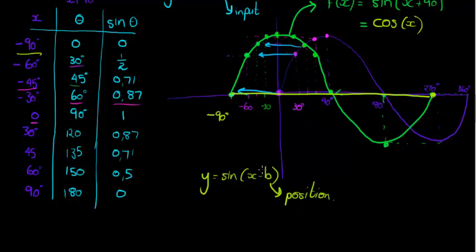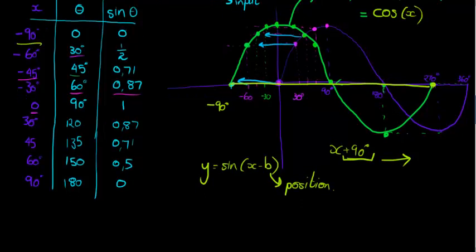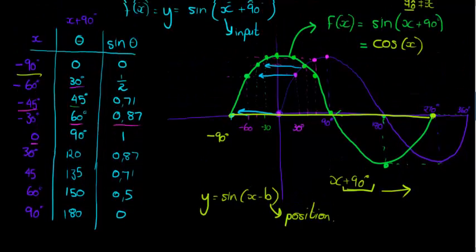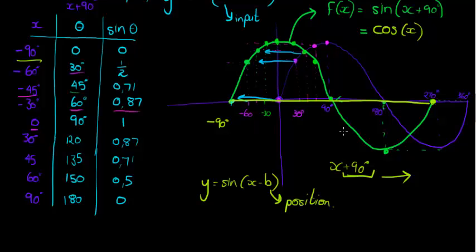Notice that b was x + 90°, and because we added, the graph moved to the left. This is very counterintuitive to most students — they think adding to x should move it to the right. The graph has to compensate for the 90 that's added, so it moves to the left. A helpful approach is to find the starting point — the center.